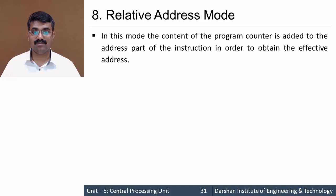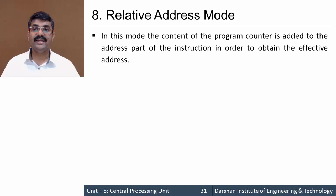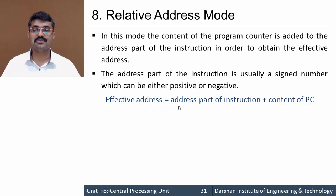Next is relative address mode. In this mode the content of the program counter (PC) is added to the address part of the instruction. The effective address = address part of the instruction + content of PC. So the actual operand is located at the effective address obtained by adding the address part to the content of the PC register.